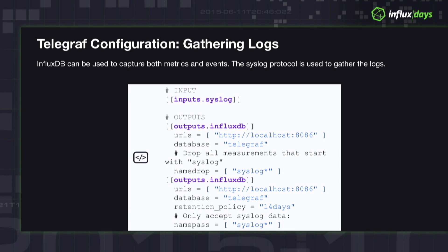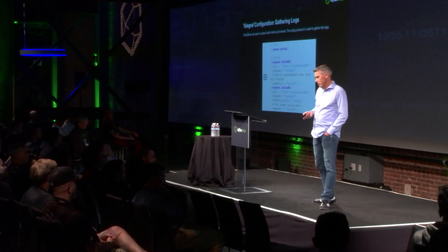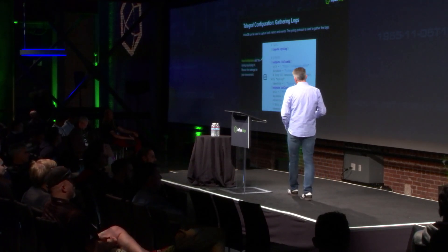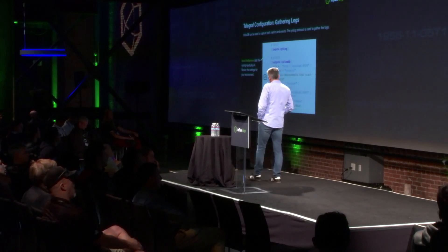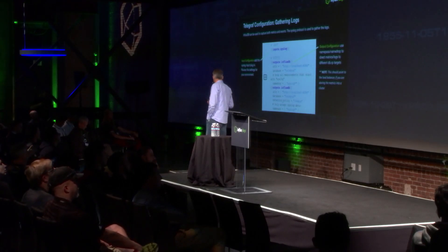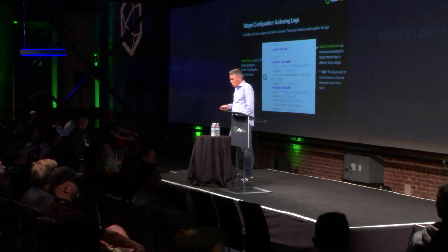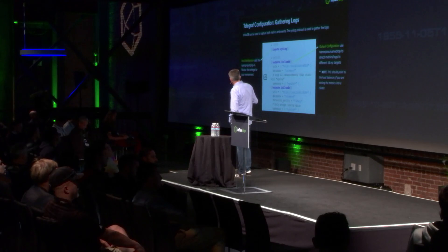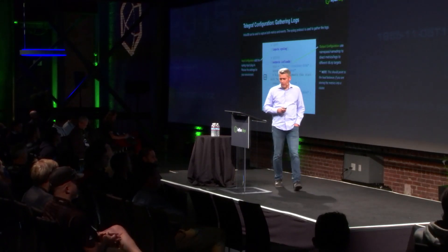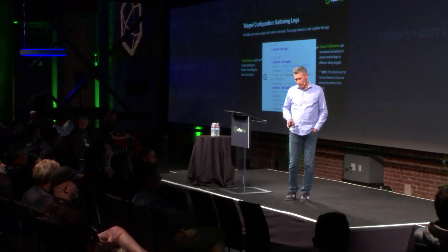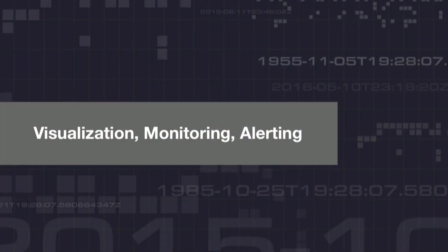My favorite topic — and I'm glad Dylan spent time on this — is gathering log information. The metrics are the early warning system; the logs are the context behind it. The metadata you can gather by looking at those early warning signs and telemetry points you to where you need to look in the logs for contextual information. We use the syslog input plugin as Dylan pointed out, sending the output of the logs to a specific database within the monitoring instance with a specific retention policy, named-passing only the syslog data.